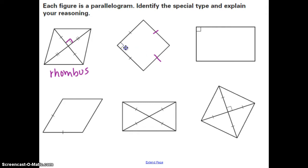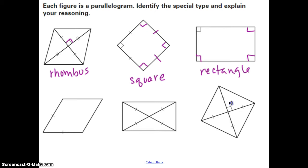In the next parallelogram, we just have a right angle. Opposite angles are congruent and consecutive angles are supplementary, so this one is a rectangle. In another parallelogram, the diagonals are bisected and each segment is congruent, meaning the diagonals themselves are congruent — which makes it a rectangle. But the diagonals are also perpendicular, which makes it a rhombus. So if it's both a rhombus and a rectangle, it's a square.